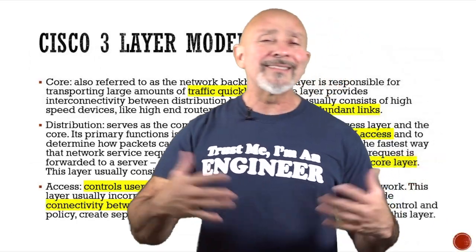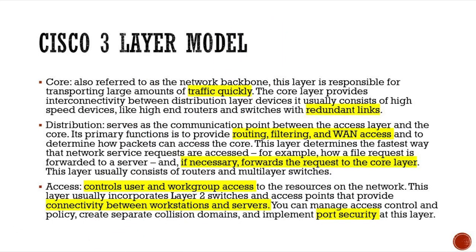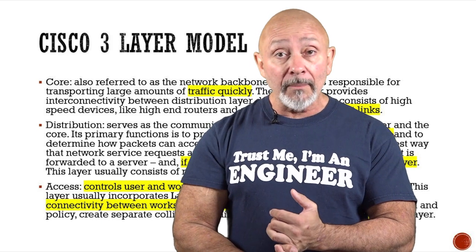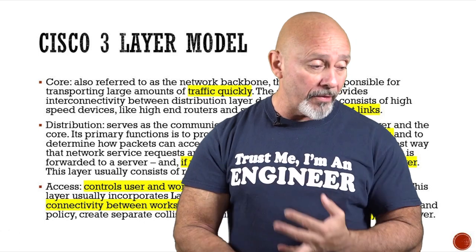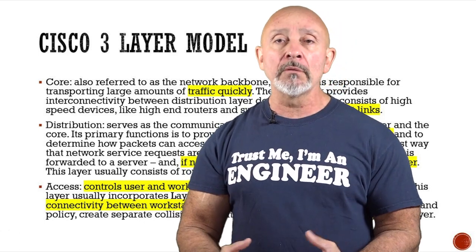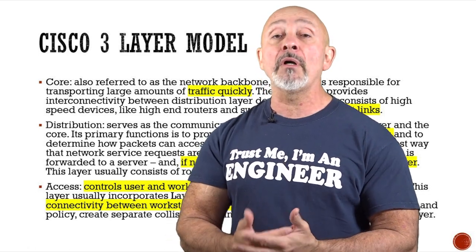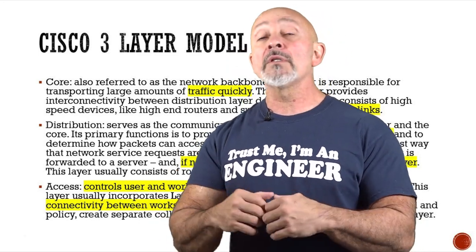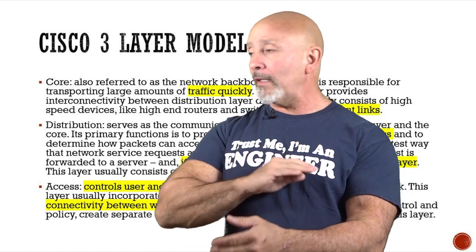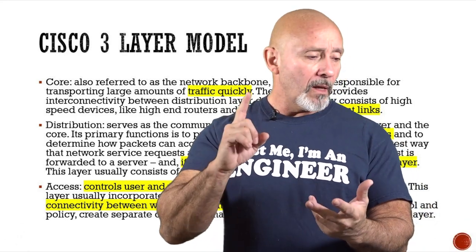The Cisco three-layer model has three layers: core, distribution, and access. In the core — I've highlighted the stuff you need to pay attention to — traffic moves quickly, meaning it needs to send traffic fast. You're going to have fast links and redundancy there. You're not going to burden the core routers with access lists, inter-VLANs, and all that — you want information to get through and just send it out.